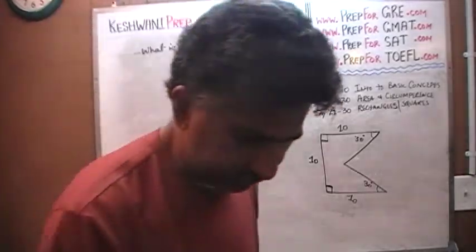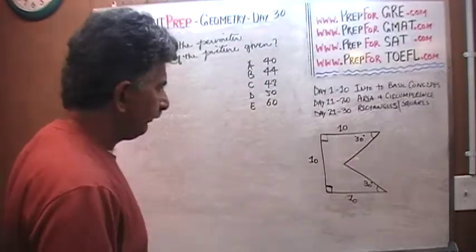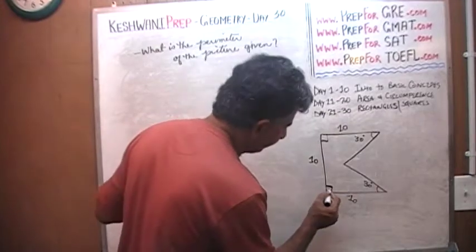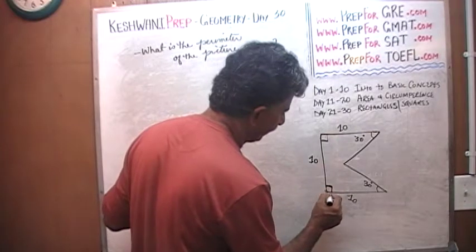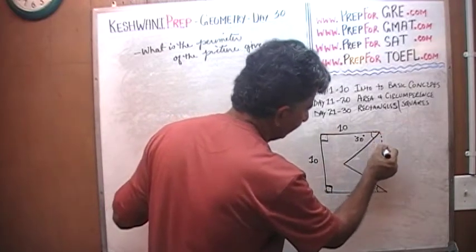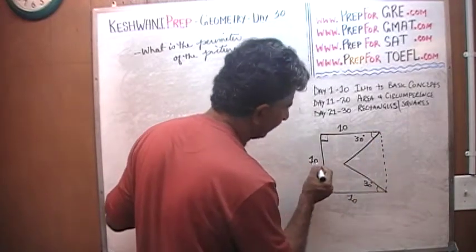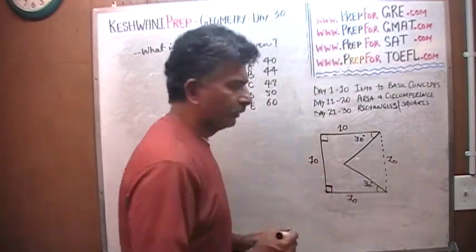Alright, here is the deal. Watch what happens here. We know that this is right angle, we know this is right angle, and this is 10. If this is forming a right angle and this is forming a right angle, then this side from here to here, if this is 10, this side must also be 10, would you agree.